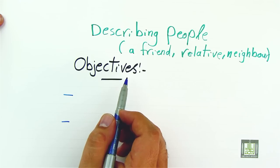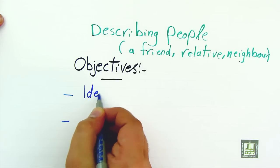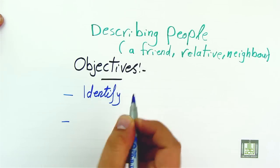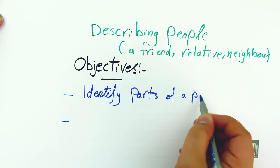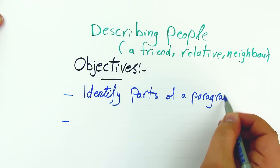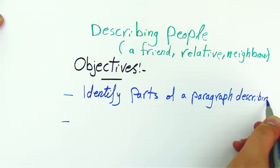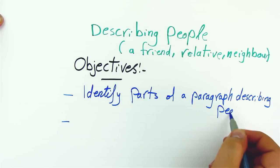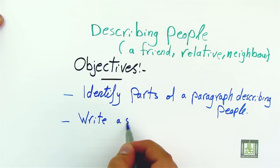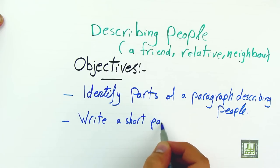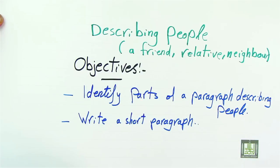By the end of this lesson, students will be able to meet the following objectives. First, they should be able to identify parts of a paragraph describing people. Second, they will be able to write a short paragraph describing people.